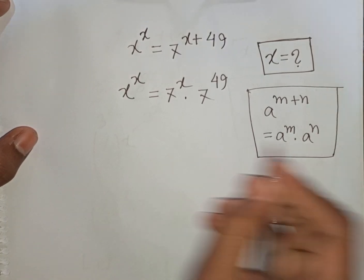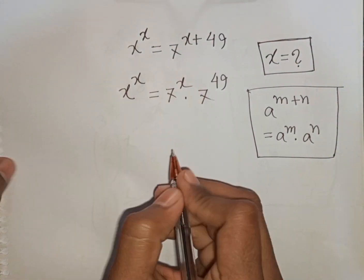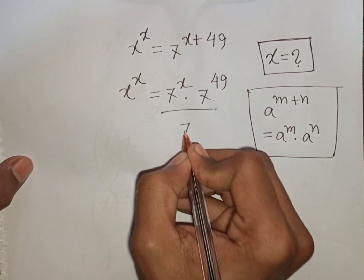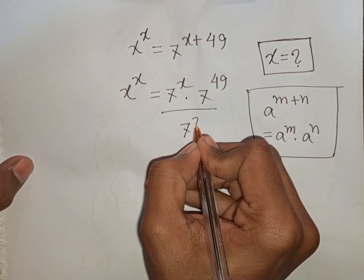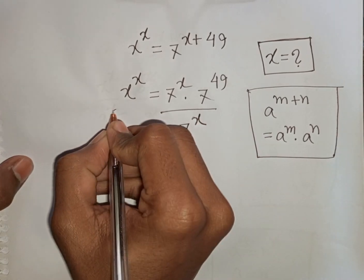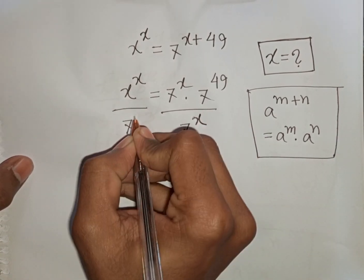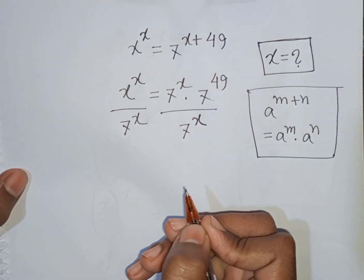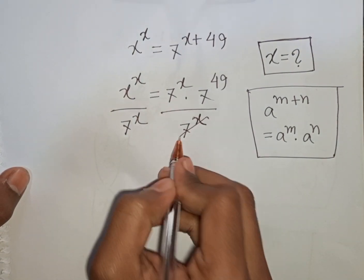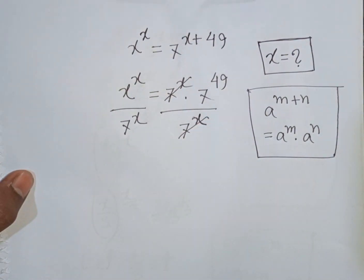Now we divide both sides by 7^x. We can see that 7^x divided by 7^x will cancel out.